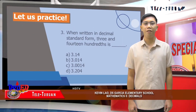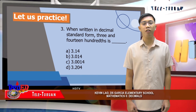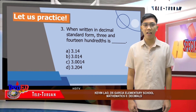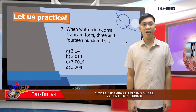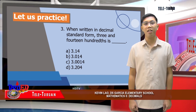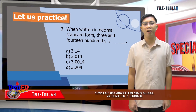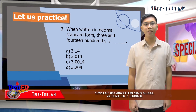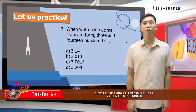Number three: when written in decimal standard form, three and fourteen-hundredths is blank. The choices are A, 3.14; B, three and fourteen-thousandths; C, three and fourteen ten-thousandths; or D, three and two hundred four thousandths. The correct answer is A, three and fourteen-hundredths.